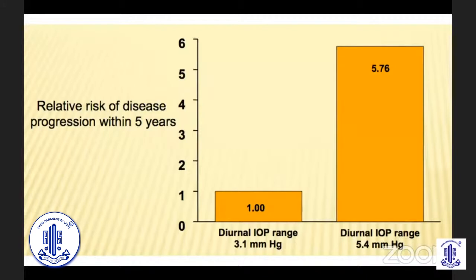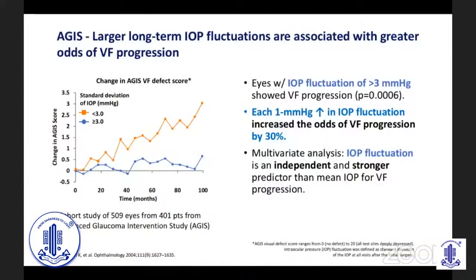Some studies clearly show that the relative risk of glaucoma progressing over 5 years is very low when the diurnal IOP range is low, but rises significantly when the diurnal IOP range is 5 mmHg or more. The Advanced Glaucoma Intervention Study (AGIS) showed that larger long-term IOP fluctuations are associated with greater odds of visual field progression. Eyes with fluctuation greater than 3 mm showed visual field progression, and every 1 mm of IOP fluctuation increased the odds of visual field progression by 30%. In multivariate analysis, IOP fluctuation is an independent and stronger predictor than mean IOP for visual field progression.